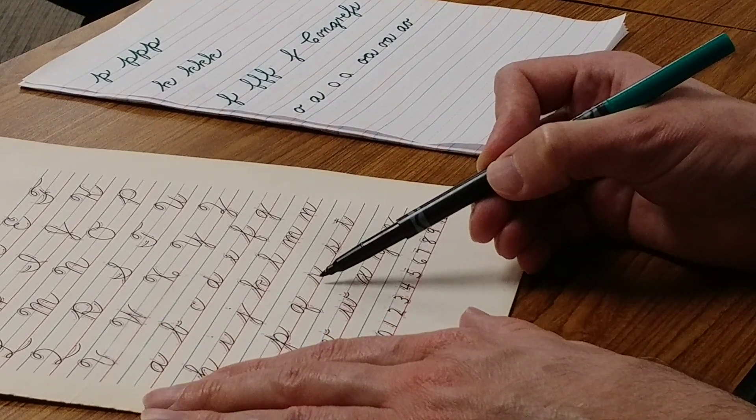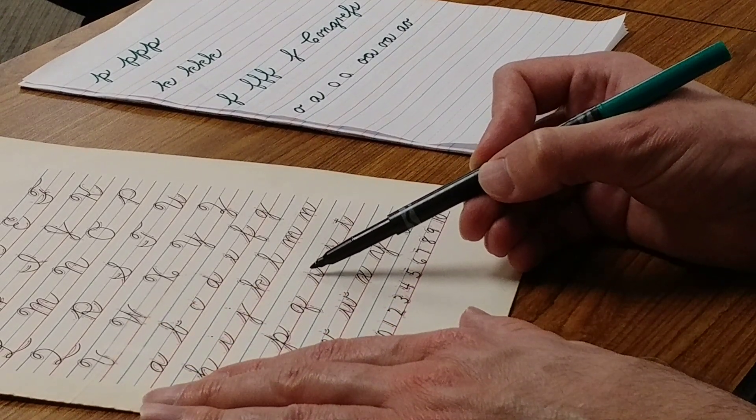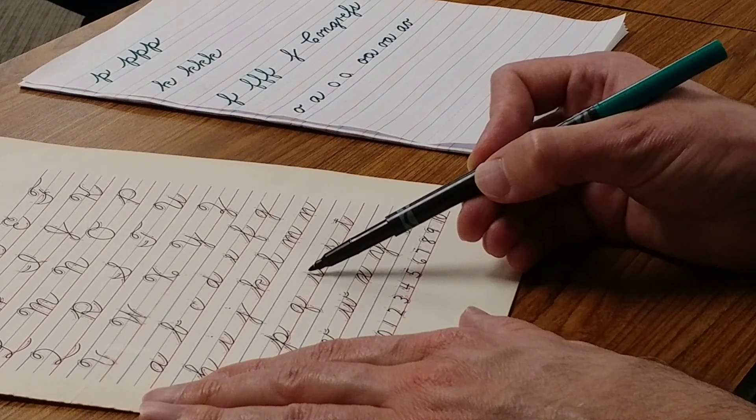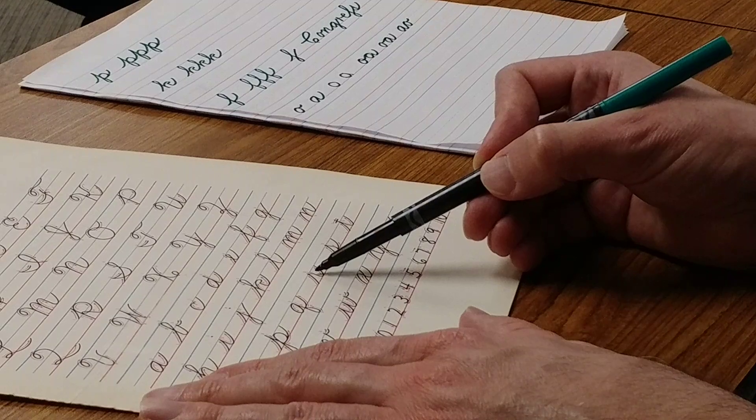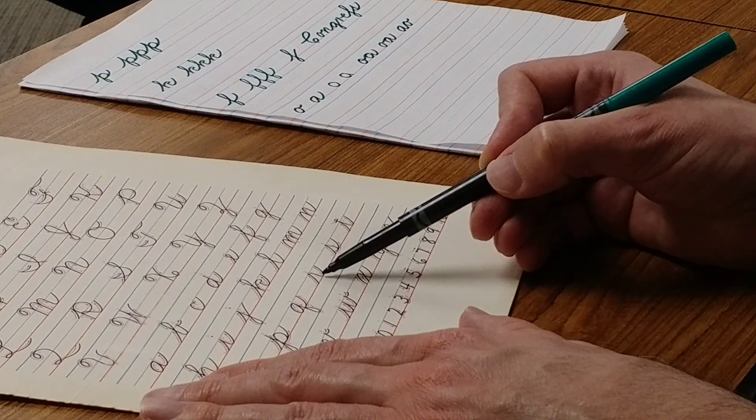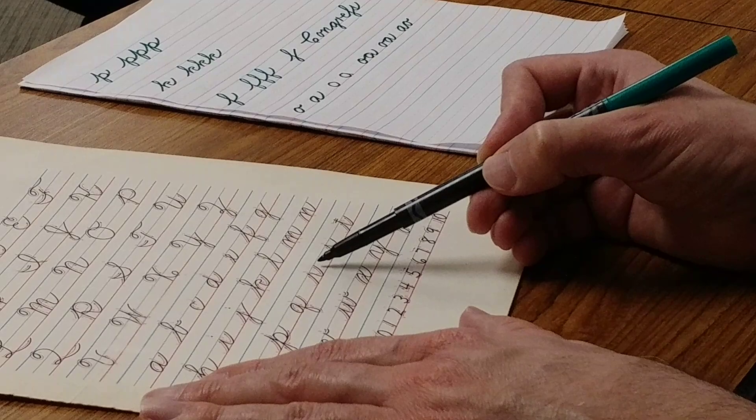Notice it starts at the base, comes up slightly past the midline. You're going to do a little retrace, sloping down to the right, and then slanting down to the baseline and finishing with an undercurve.